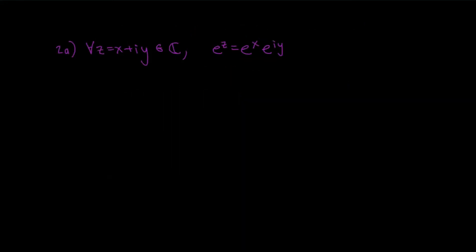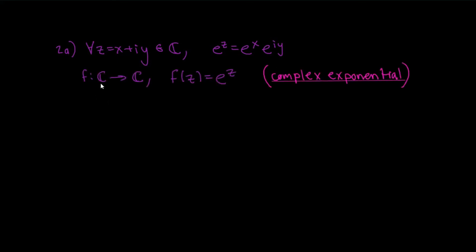The next function I'm going to talk about is the complex exponential. There are a number of ways to define it — using power series or as a solution to a differential equation — but I'm going to define it simply, since all definitions end up being equivalent. If z = x + iy, I define e^z = e^x · e^(iy). Since e^(iy) = cos(y) + i·sin(y), the function f(z) = e^z is called the complex exponential function.